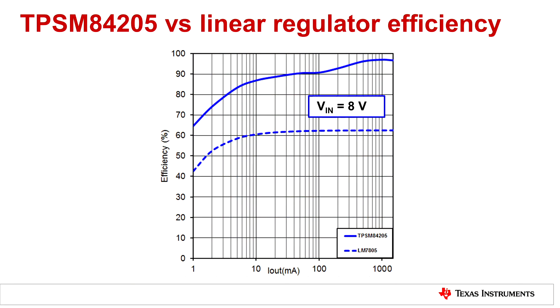So here we show a graph of the TPSM 84205 versus a linear regulator. The top graph is the efficiency of the TPSM 84205 operating from an input voltage of 8 volts with an output voltage of 5 volts. And the bottom graph is the efficiency of a linear regulator with the same input and output voltage conditions.